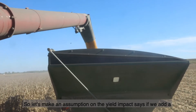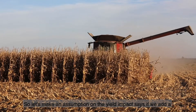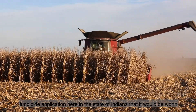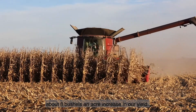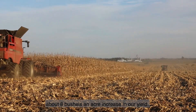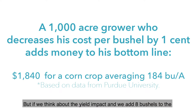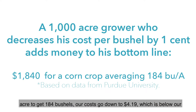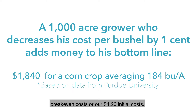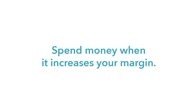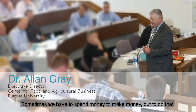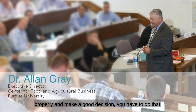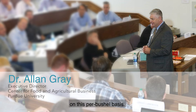Let's make an assumption on the yield impacts: if we add a fungicide application here in the state of Indiana, it would be worth about eight bushels per acre increase in our yields. If we think about that yield impact and add eight bushels to the acre — 184 bushels — our costs go down to $4.19 per bushel, which is below our breakeven cost of $4.20. Sometimes we have to spend money to make money, but to do that properly and make a good decision, you have to do that on a per bushel basis.